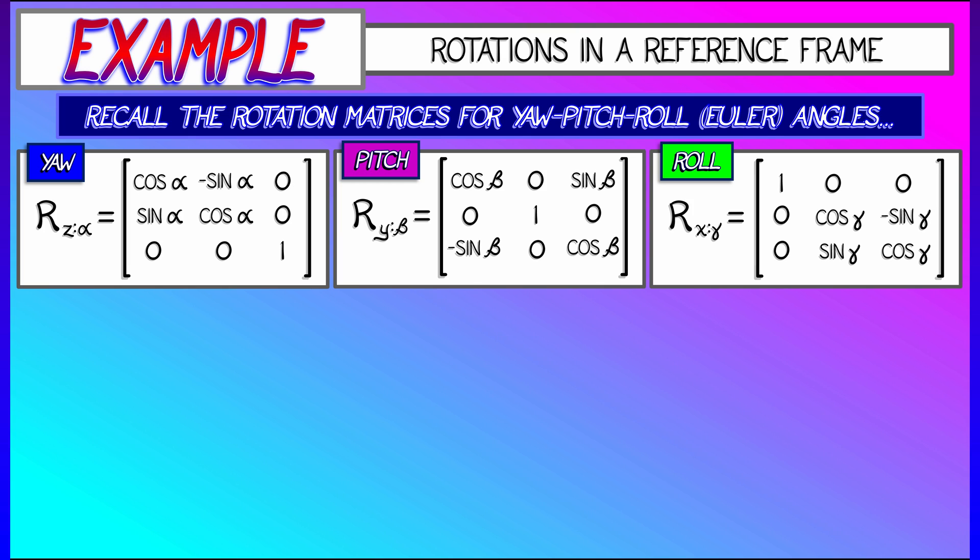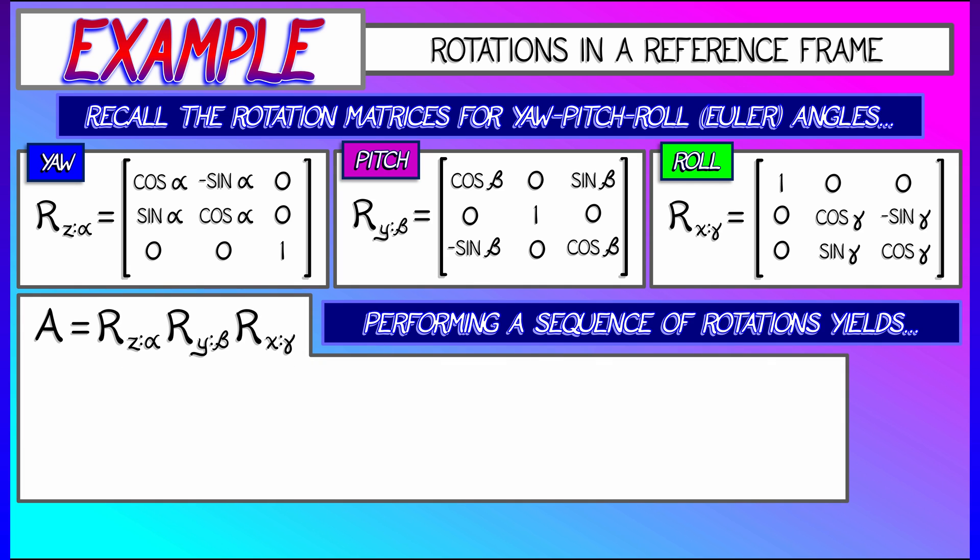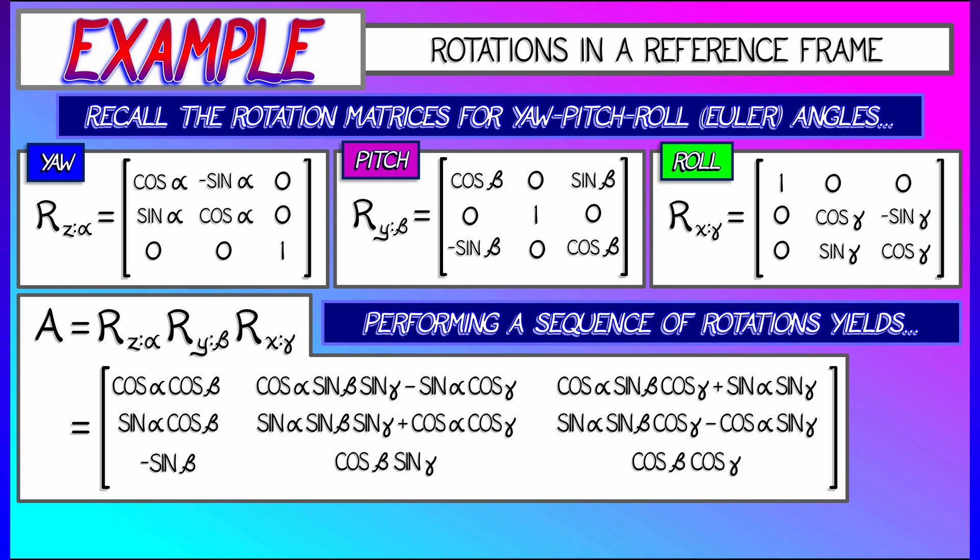What happens if we put them together? What happens if we first rotate about one axis, then about another, then about the last? What linear transformation affects that? Well, it's the product of these matrices in a particular order. If we do x first, then y, then z, we multiply them together.